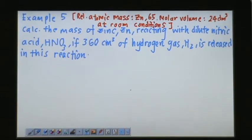Let's look at example 5. Relative atomic mass: Zinc is 65. Molar volume is 24 dm³ at room conditions. This is something that we are quite familiar with.